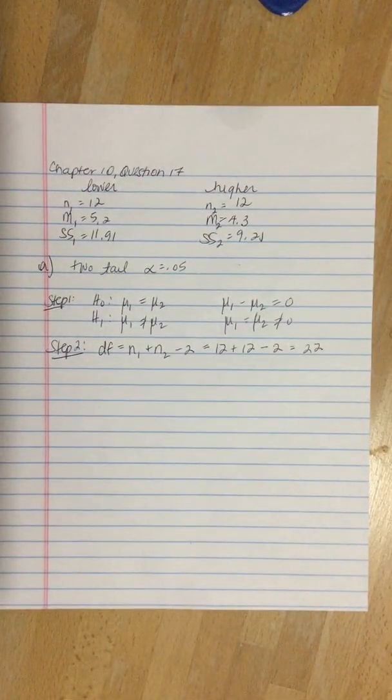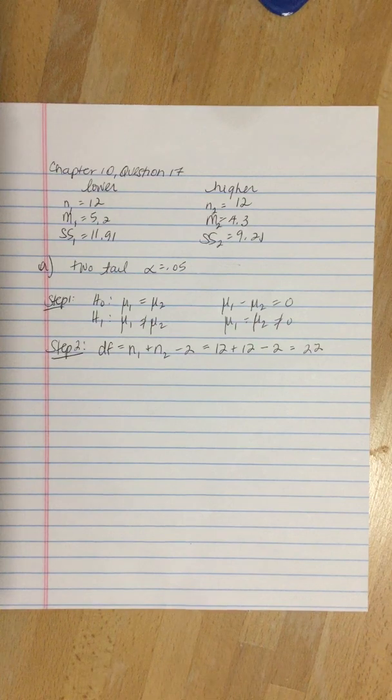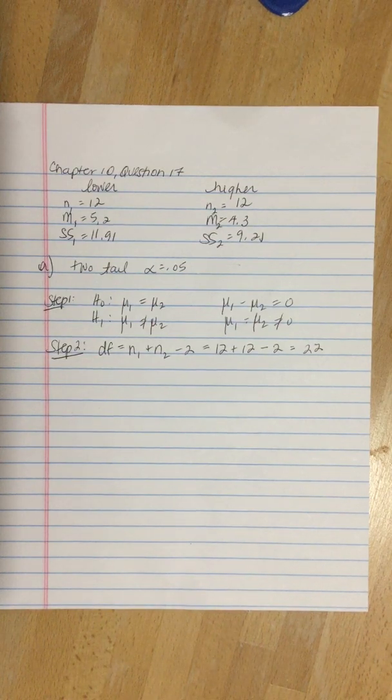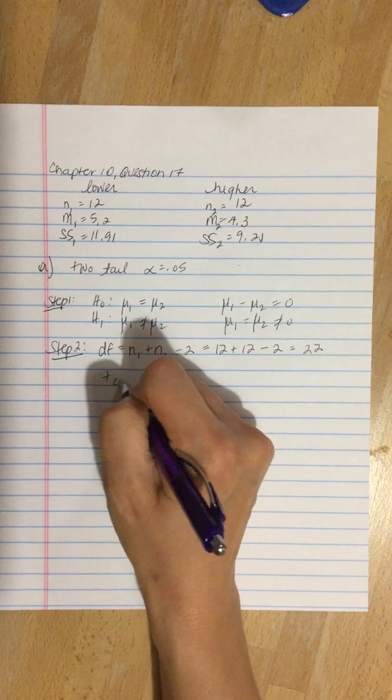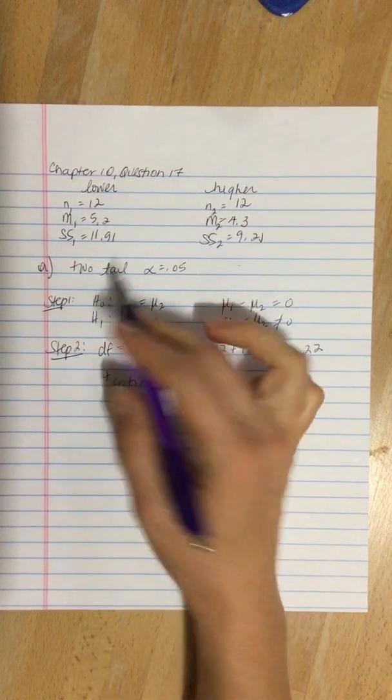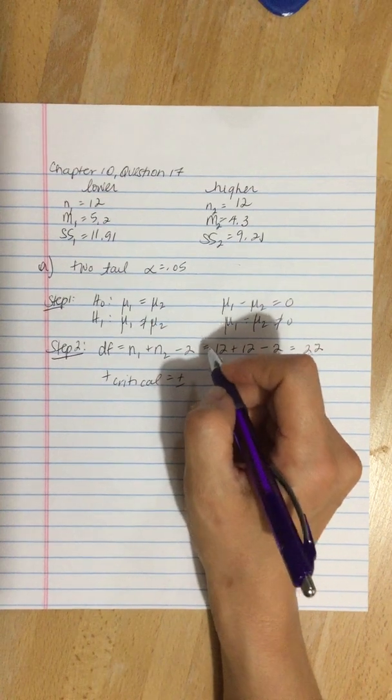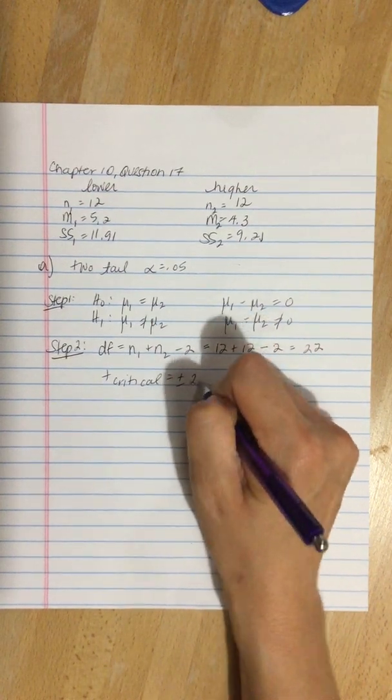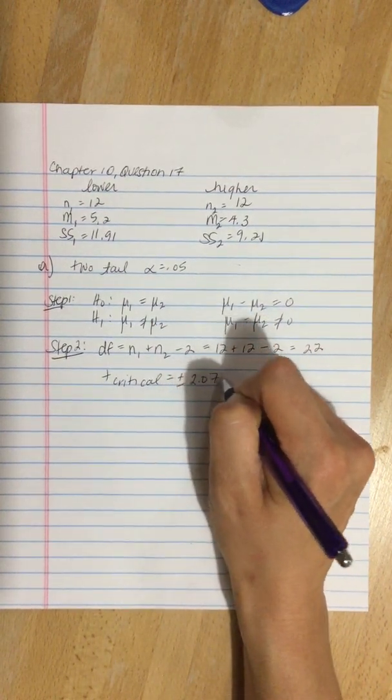If we go to the back of the book and look up our critical value, our t-critical is plus or minus—plus or minus because it's a two-tailed test—2.074.